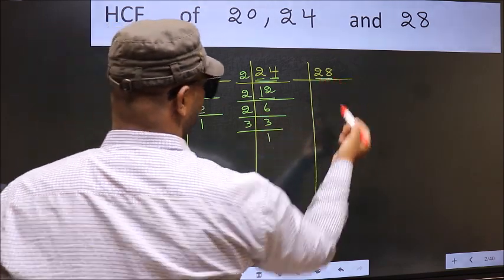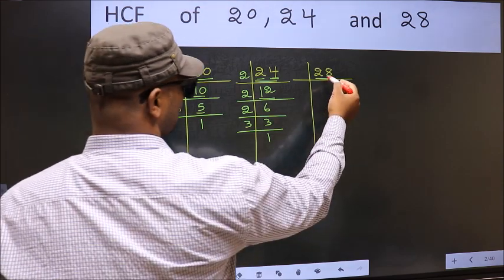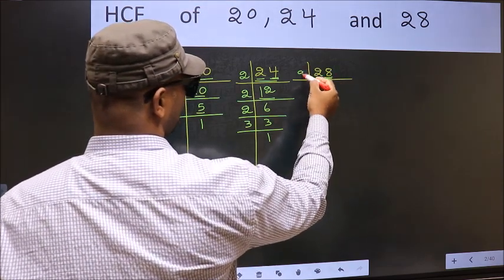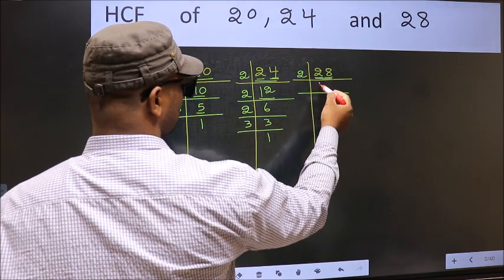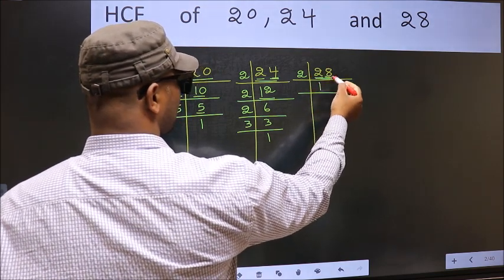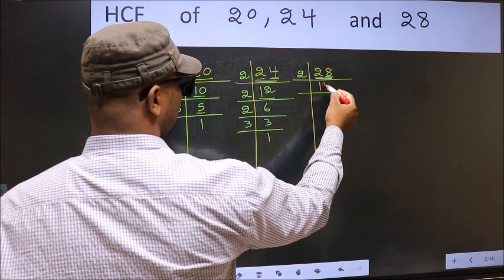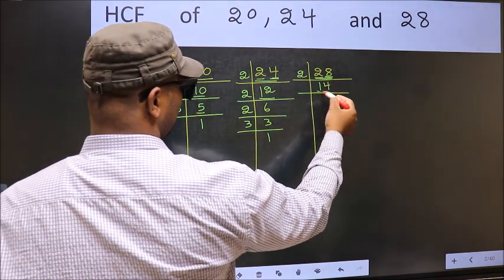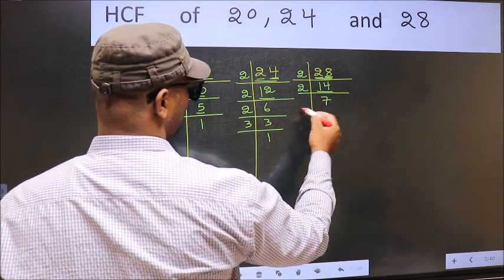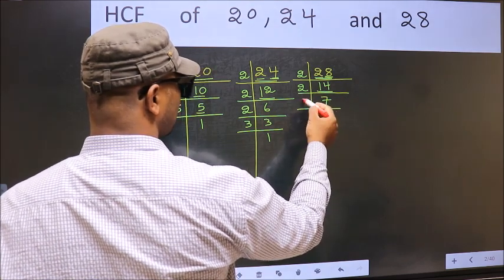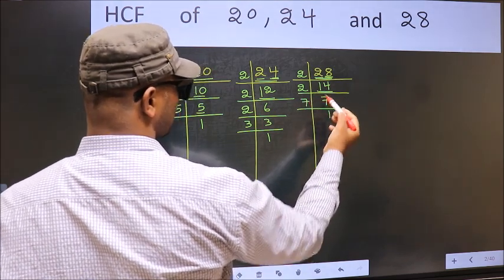Now the other number, 28. Last digit 8, even, so take 2. First number 2. When do we get 2 in 2 table? 2 times 1 is 2. The other number 8. When do we get 8 in 2 table? 2 times 4 is 8. Now here we have 14. 14 is 2 times 7. Now 7. 7 is a prime number, so 7 times 1 is 7.